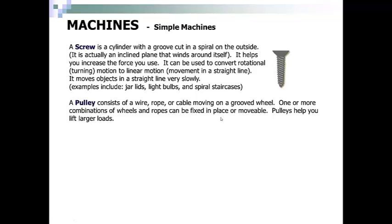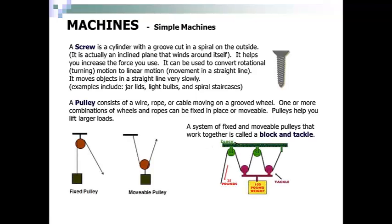A pulley consists of a wire, rope, or cable moving on a grooved wheel. One or more combinations of wheels and ropes can be fixed in place or movable. Pulleys can help you lift larger loads. A system of fixed and movable pulleys that work together is called a block and tackle. So here is a fixed pulley. The pulley is at the top and it is attached. This is a movable pulley. The rope is attached to the top, but the pulley moves up and down. This is a block and tackle system. You have a system of fixed here and movable pulleys here that work to lift the load.